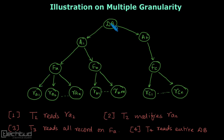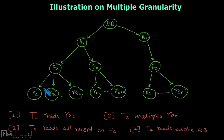When you lock a database, of course all the areas are locked. When you lock an area, all the files are locked, and when all the files are locked, all the records are locked. Because this record is inside this file, this file is inside this area, and this area is inside this database.